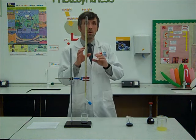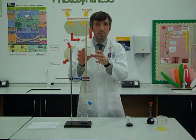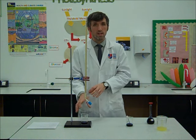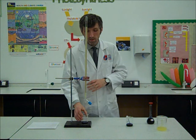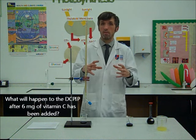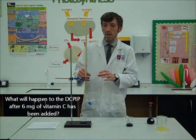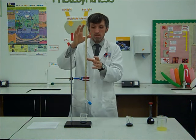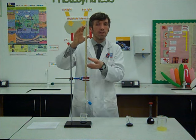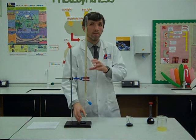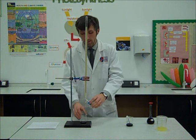Now previously to this, we've already worked out that 6mg of vitamin C from the standard solution is what's needed to decolorize the DC-PIP. So for the DC-PIP to lose its color from that deep blue color it has and to go completely clear. So what we know is when we add enough volume of the orange juice to decolorize the DC-PIP, we'll have added 6mg of vitamin C.